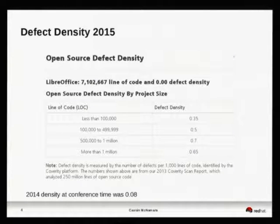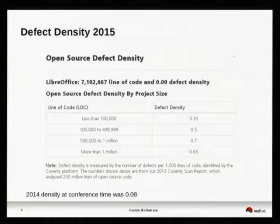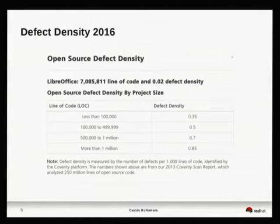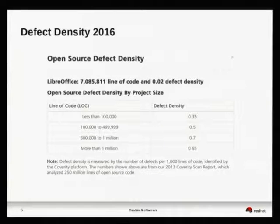That said, because LibreOffice is so large, a large amount of these statistics from that date effectively refer to us because we'd weight it by our own density. This year the number is actually back up to 0.02, but we have less code, so that's good too.